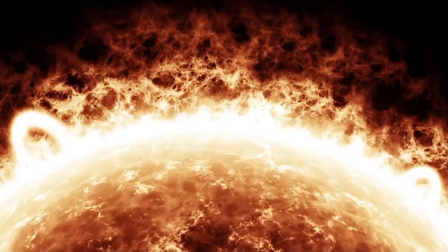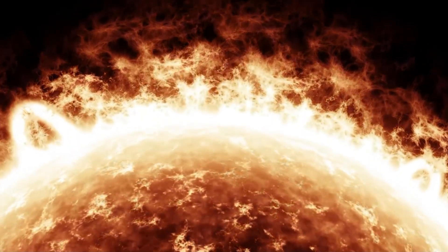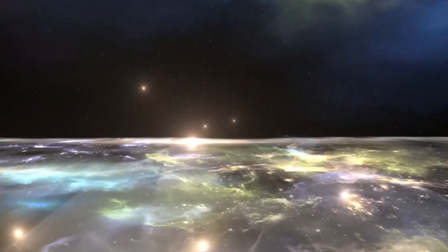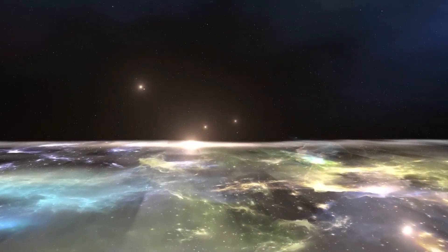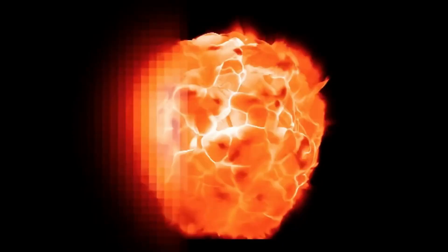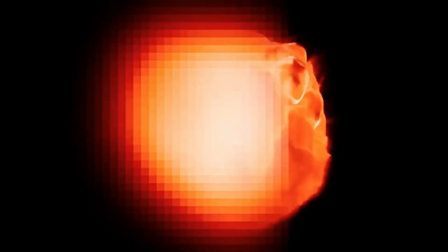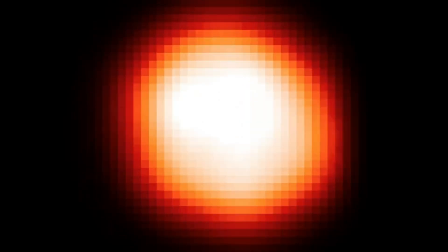In addition, Betelgeuse resides within a hot bubble in space, a dynamic and active region that could be influencing the star's life cycle in ways that we don't yet fully understand. Could the hot bubble be accelerating Betelgeuse's death, or is it simply a part of the normal process of stellar evolution?